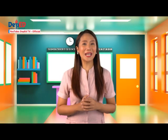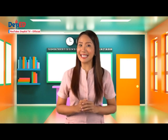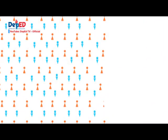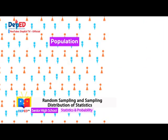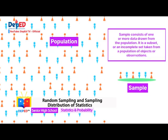Today, be ready to capture the complete picture of random sampling and sampling distribution of statistics. Population includes all of its elements from a set of data, and the size of the population is the number of observations in the population. Sample consists of one or more data drawn from the population — it is a subset or an incomplete set taken from a population of objects or observations.